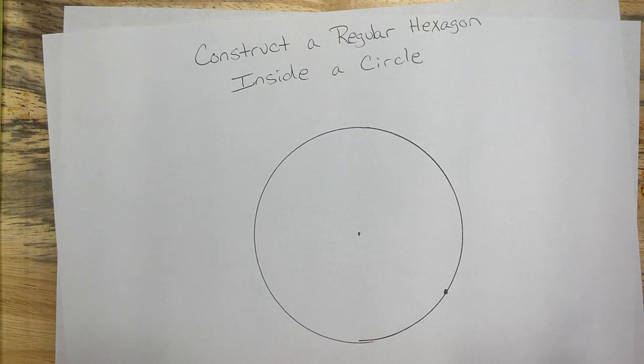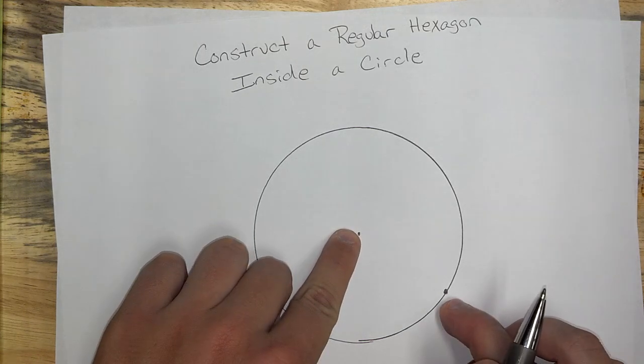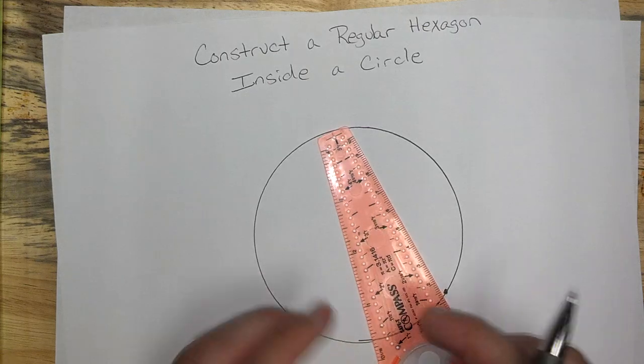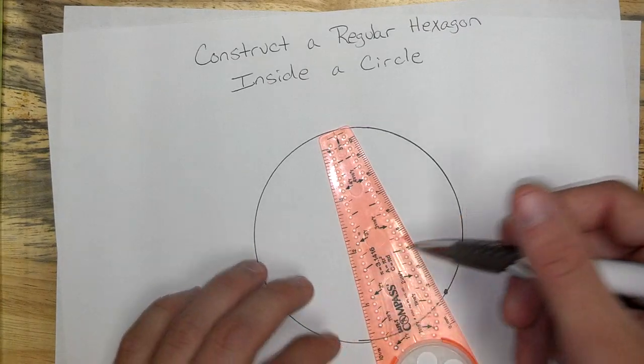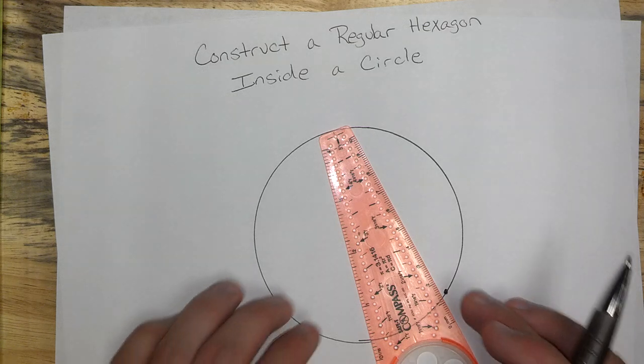Now, using whichever setting that you used to make your radius of your circle, for me it was the 2-inch hole. For you guys, it might have been the 1-inch hole, or the 3rd hole, the 4th hole, 10th hole. Whichever setting that you used,